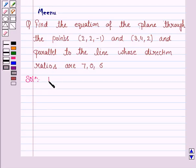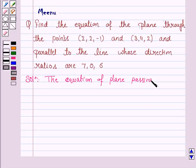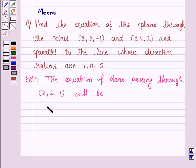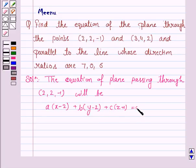The equation of the plane passing through the point (2, 2, -1) will be: a(x - 2) + b(y - 2) + c(z + 1) = 0. Let us name this as equation 1.